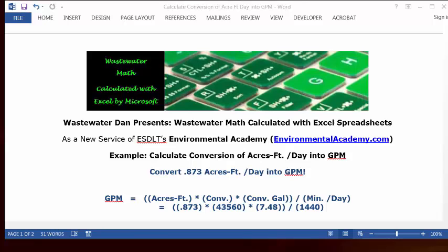To solve this problem we're going to set up a formula to find the gallons per minute, the GPM. We're going to do this by taking the acres per foot, in this case we're going to put it in as a decimal, and we're going to multiply that by the conversion factor from square feet to acres, and then we're going to multiply that by the conversion factor to gallons, and then we're going to divide that by the number of minutes per day.